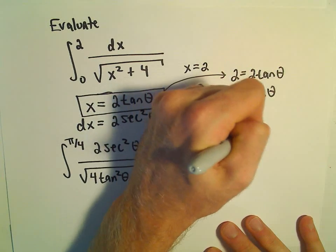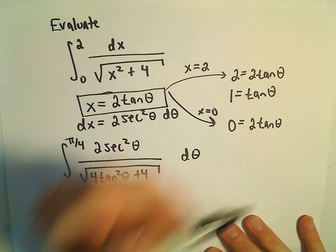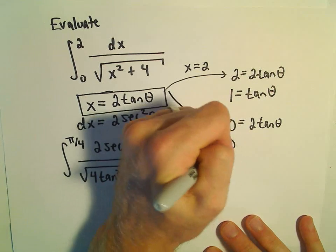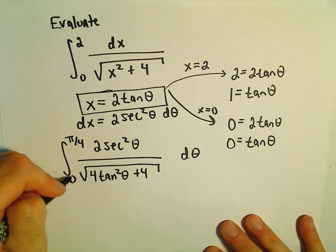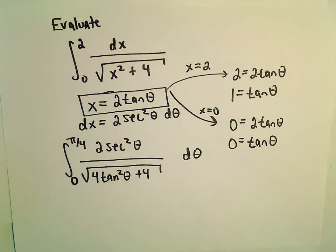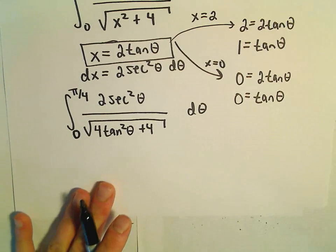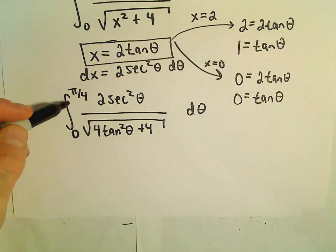For the lower limit where x = 0, we have 0 = 2tan(θ). Dividing by 2 gives us tan(θ) = 0, and tan(0) = 0. So now we have our new integral with the correct limits of integration.